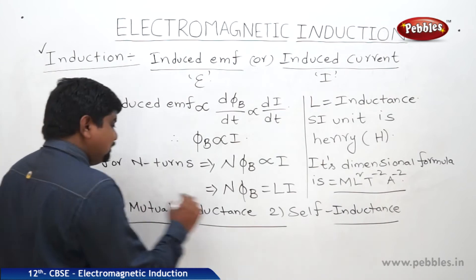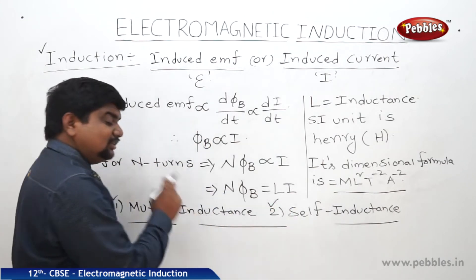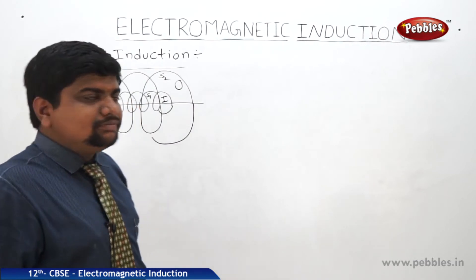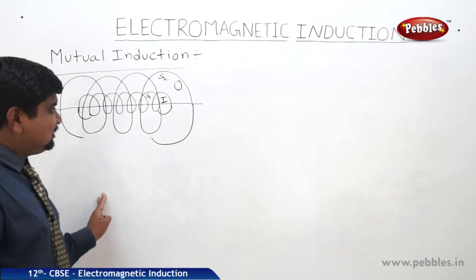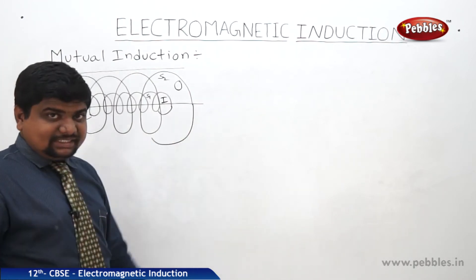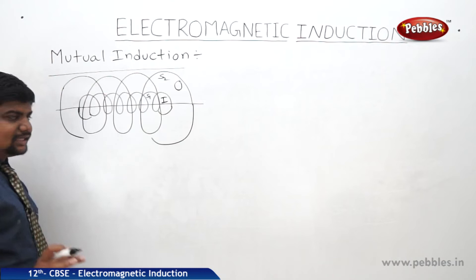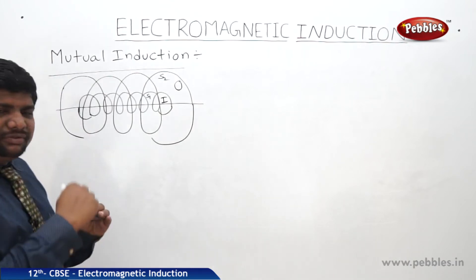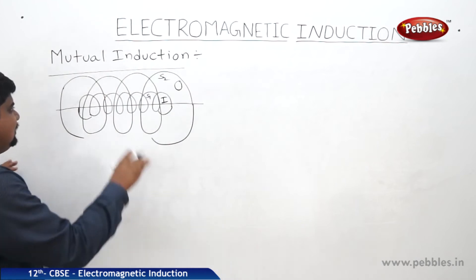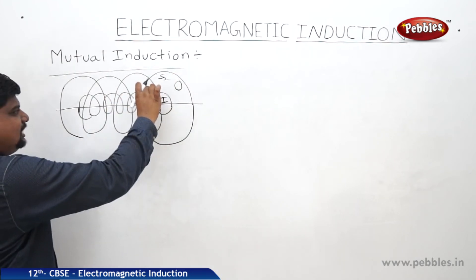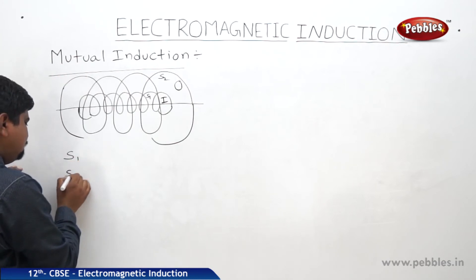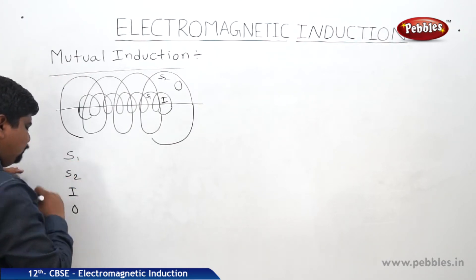Now we are going to discuss the equation parts of these two induction properties, starting with mutual induction. Mutual induction is like a mutual understanding between the same category materials. In the diagram, we have S1 (inner coil) and S2 (outer coil), also labeled as I for inner and O for outer. These coils are solenoids, so we call them the inner solenoid S1 and the outer solenoid S2.